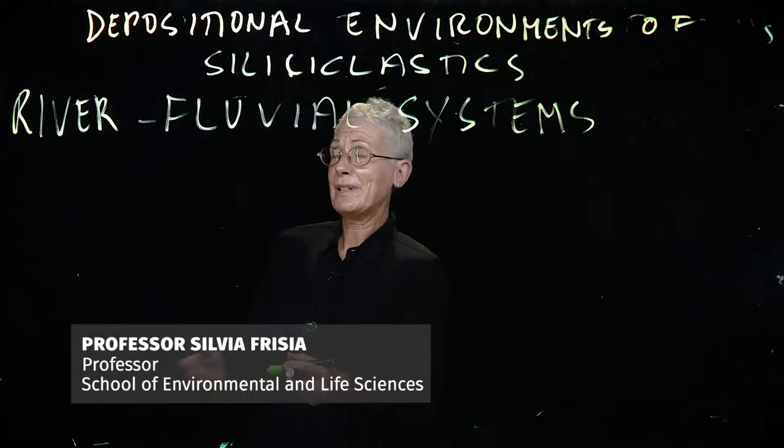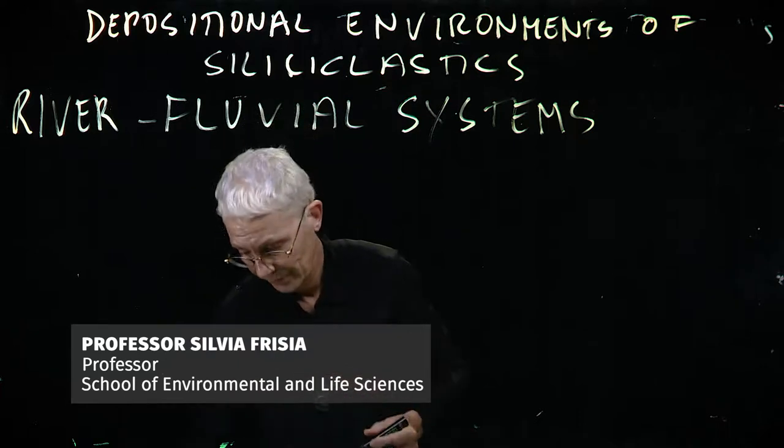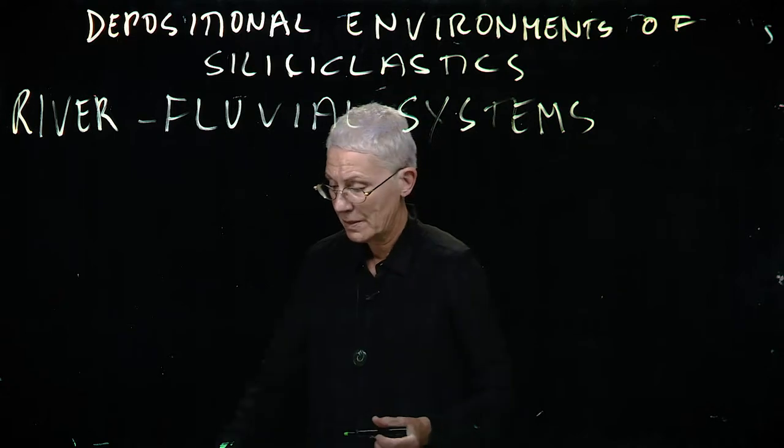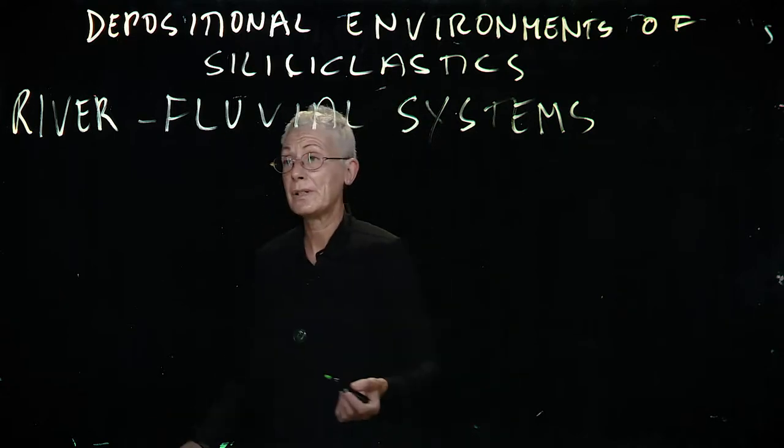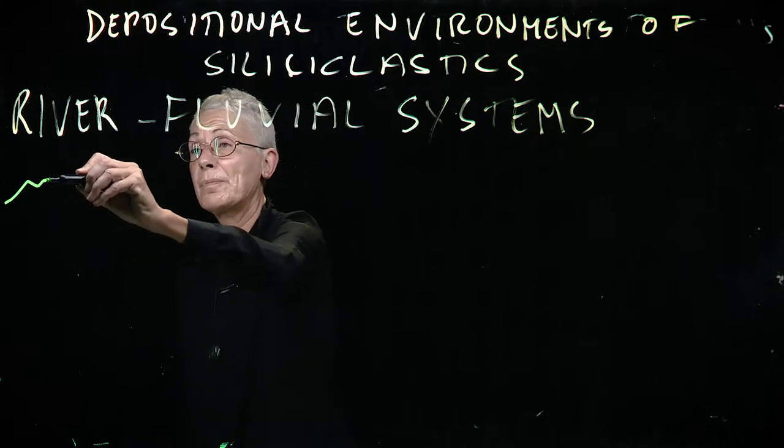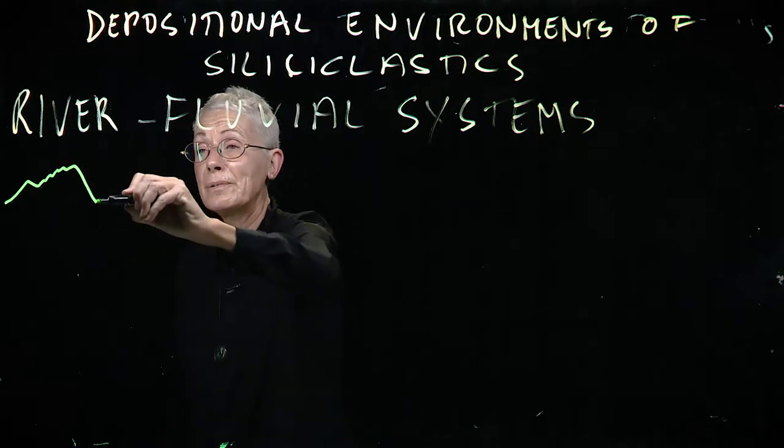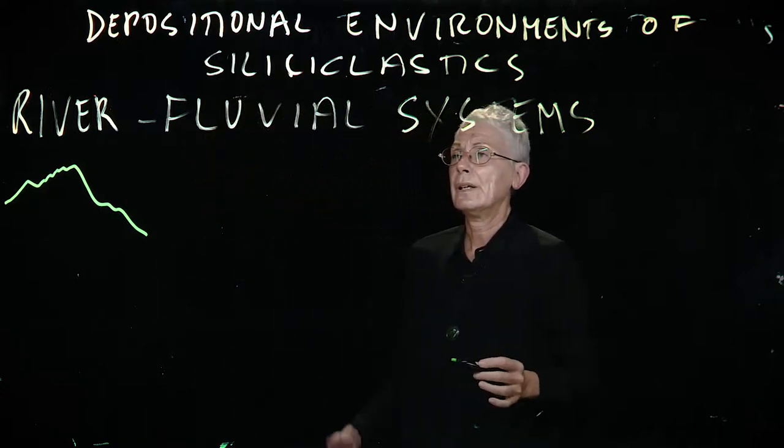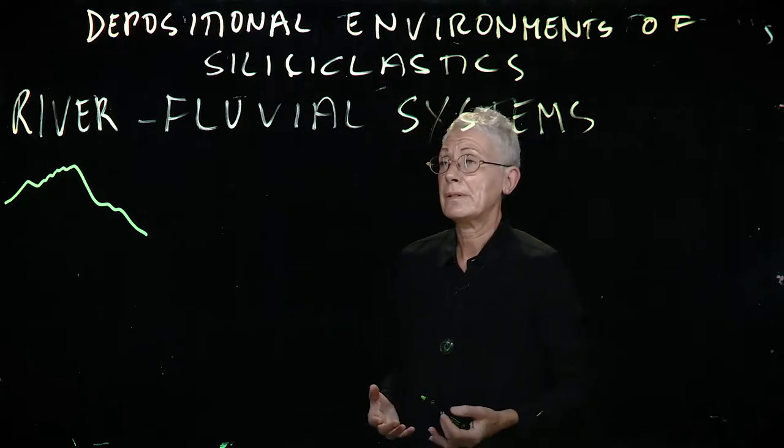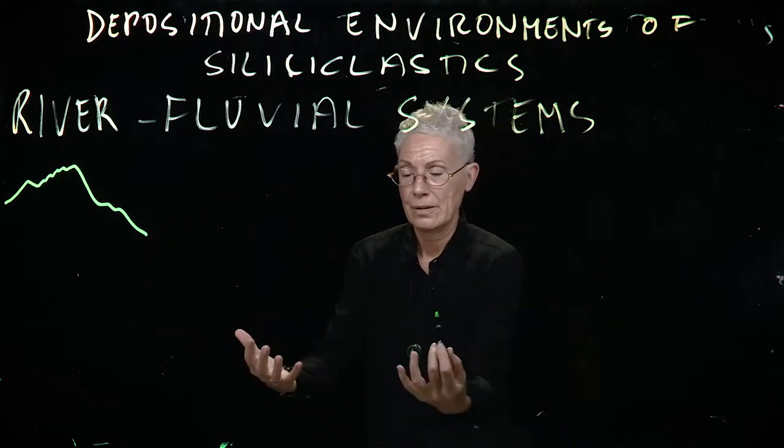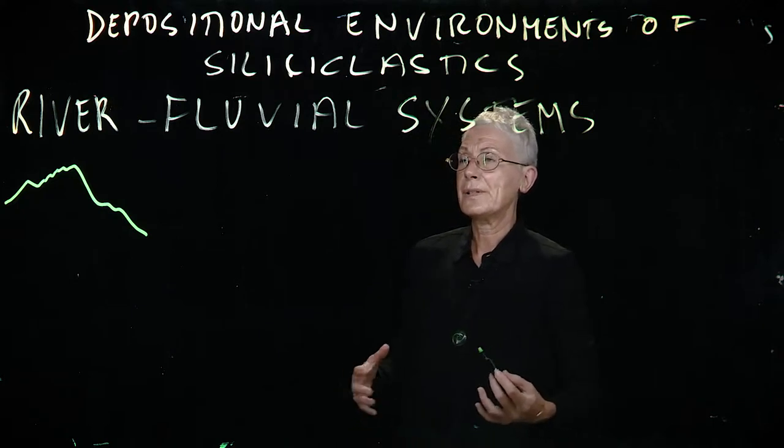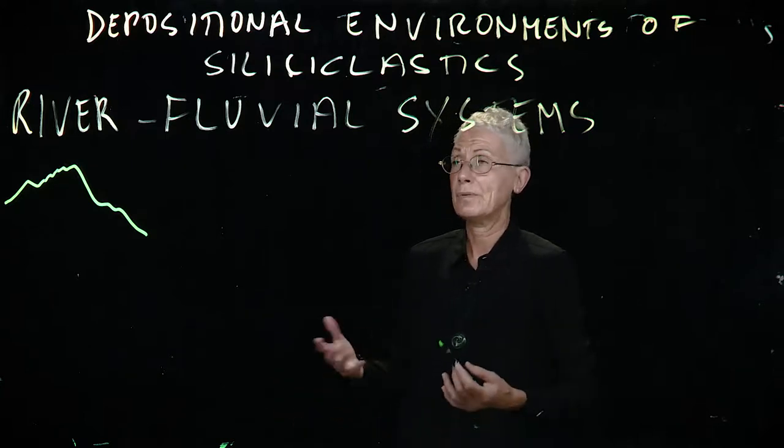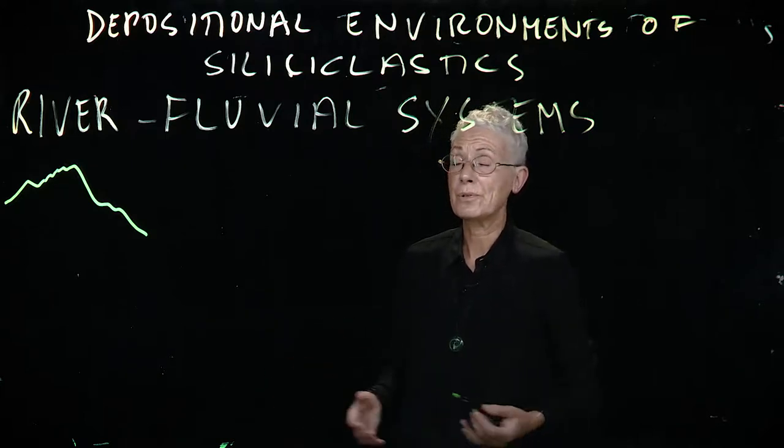Where do we start from? We start from the beginning. Where is the beginning of a fluvial system? The beginning of a fluvial system is at a catchment where you have mountains or hills. It's where the rainwater is being collected and then it becomes progressively from streams, rivulet streams, it becomes a conspicuous river.